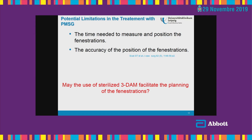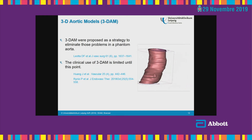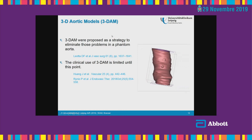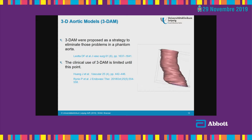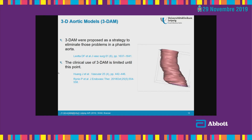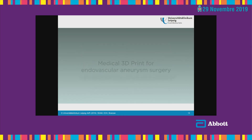We heard about 3D printing. There was a 3D printer in the hospital, and we said: why not use 3D printing to facilitate the planning of our cases? We searched the literature. I found only two publications at that time — one from a U.S. group where a 3D aortic model was proposed as a strategy to eliminate problems, but using a phantom aorta in a CT scan; and two other teams that used this model, but not clinically. So we developed our own method.